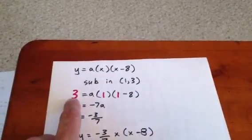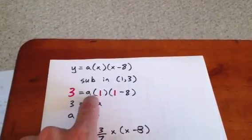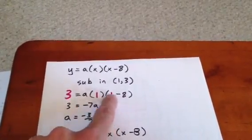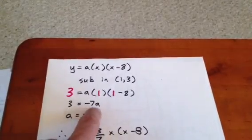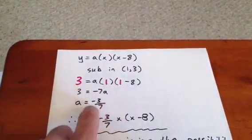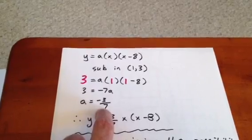We then sub in a 3 for y and a 1 for x. So a times 1 times 1 minus 8 is the same as negative 7a. So 3 is equal to negative 7a. Well, that means a equals negative 3 sevenths.